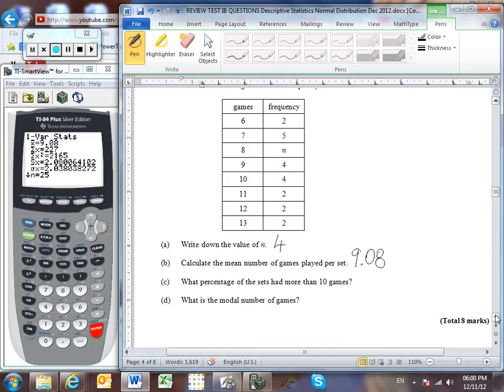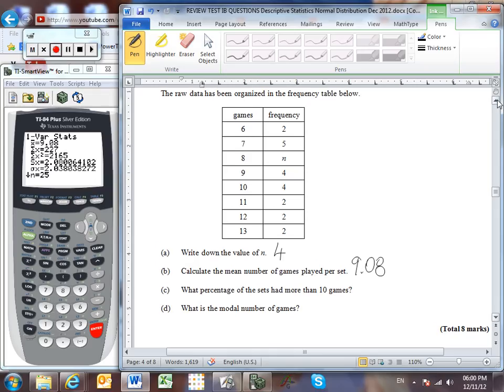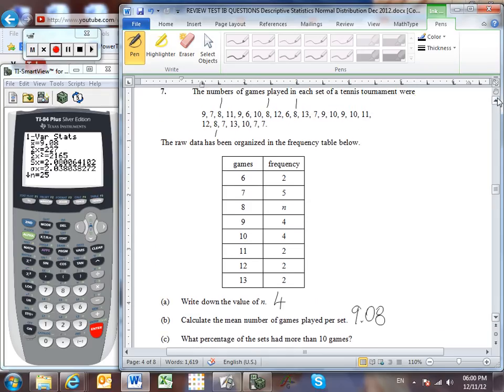What percentage of the sets had more than 10 games? Okay, well, you can see that the total number of sets played. Boy, I'm going to have to go up and count this, aren't I? Oh actually, no, I don't. The number here is 25. That represents the sum of all of the frequencies. There are indeed 25 different sets have been played.